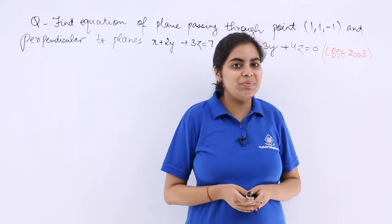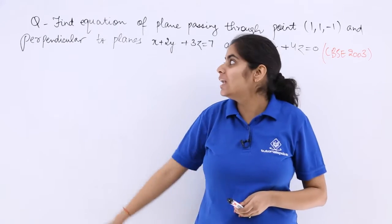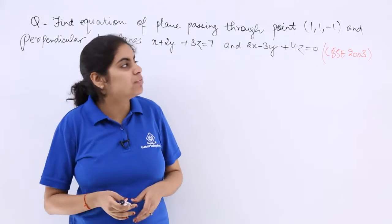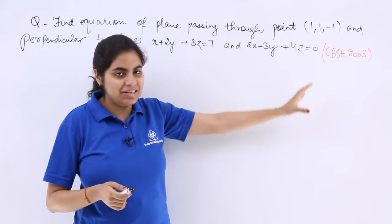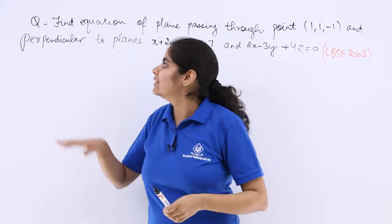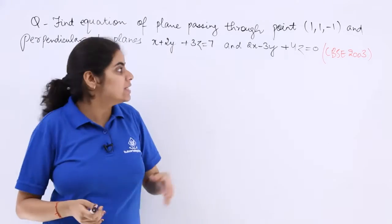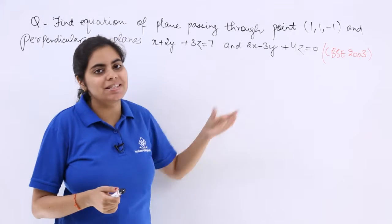This question was asked in the CBSC examination year 2003. It says find the equation of the plane passing through the point (1, 1, -1) and perpendicular to the planes with the first equation and the second equation.